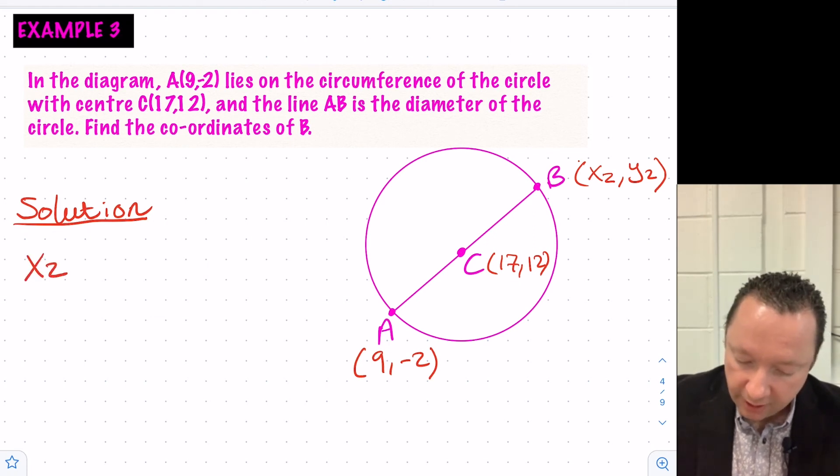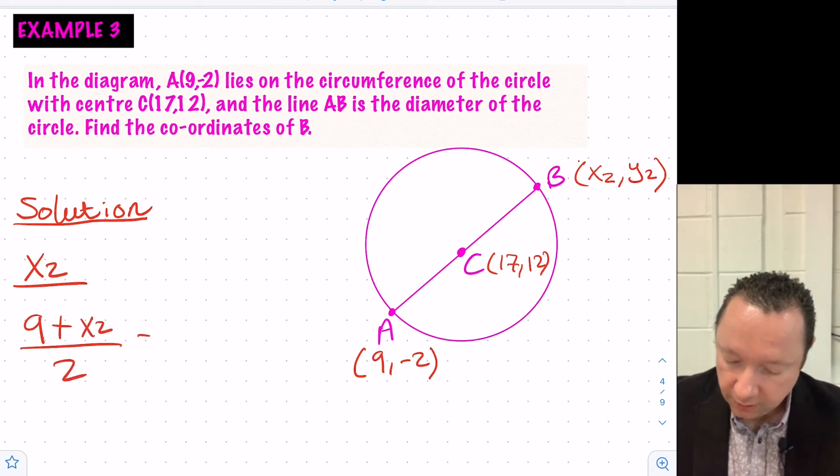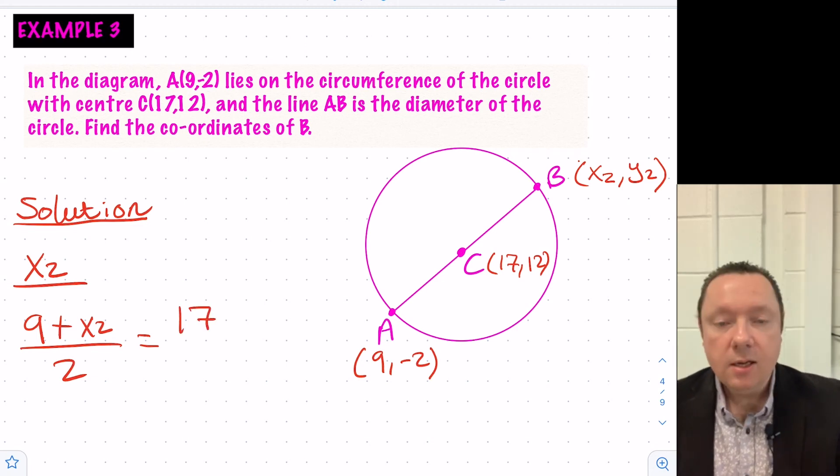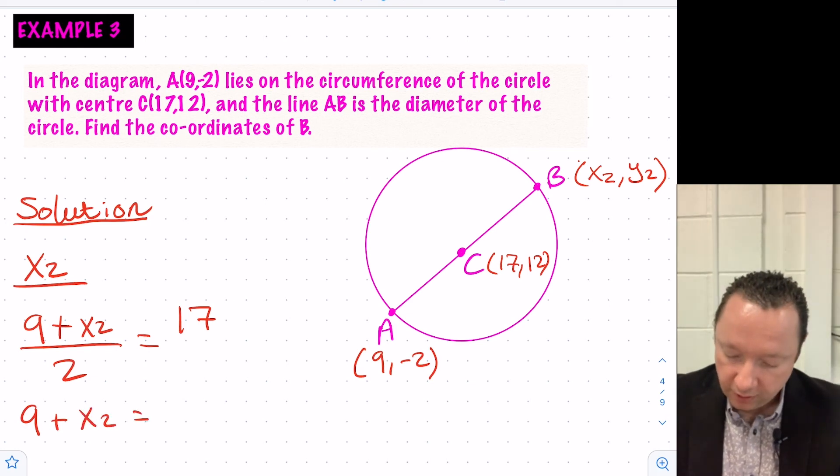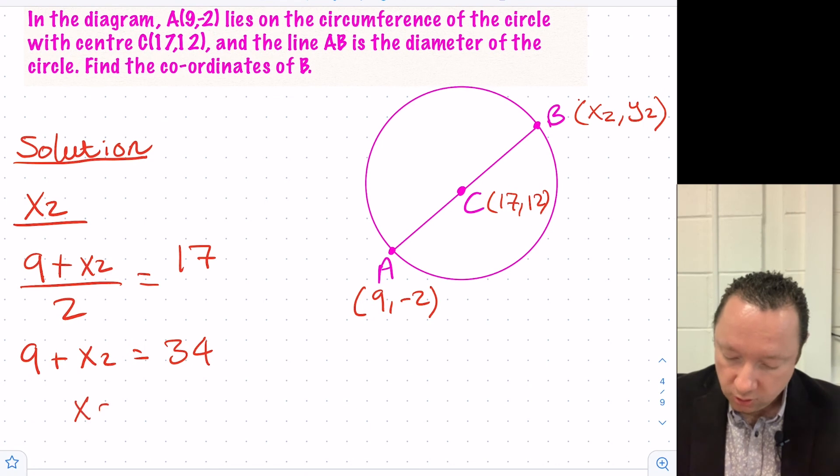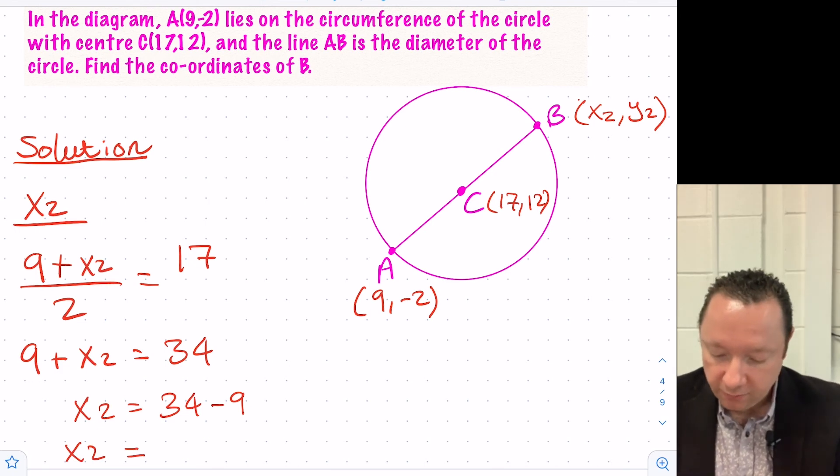So for our x's, to get x2, we'll do 9 plus x2 divided by 2 equals the first coordinate of the middle, 17. So we can work backwards, and that means that 9 plus x2 must equal 2 times 17, which is 34. So our x2 is 34 minus 9. So our x-coordinate is 25.